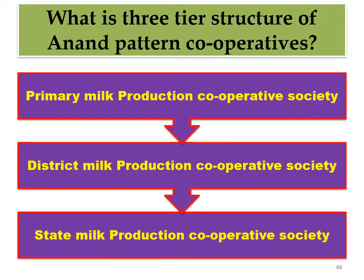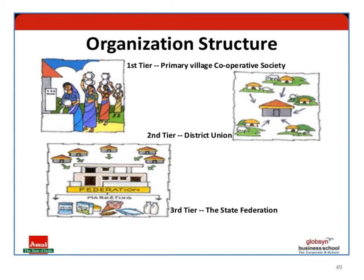The three-tier structure of dairy cooperative is a frequently asked question. The first tier is the primary village cooperative society - these are collection centers at the village level where Amul Dairy purchases milk from dairy farmers. The second tier is the district union - milk collected at village level is chilled and taken to the district level, such as Surat district cooperative or Junagadh district dairy.